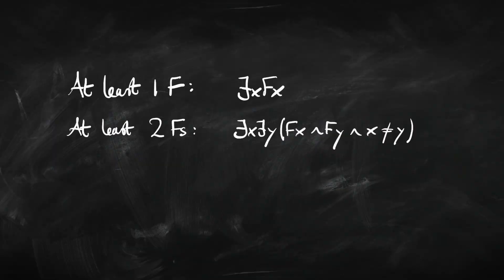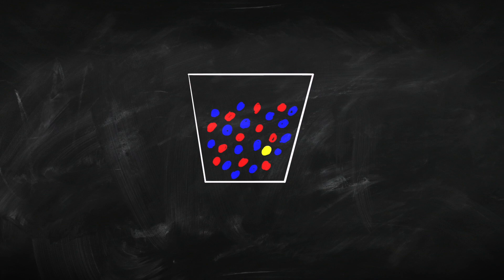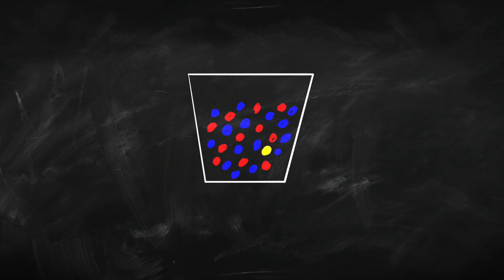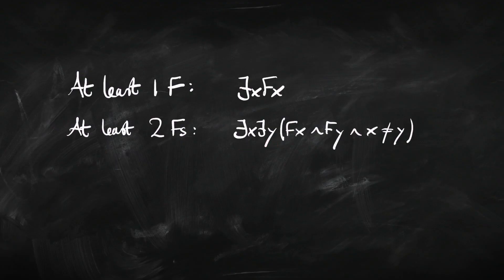So the sentence we need to express that there's at least two F's is: there's an x, there's a y, x is F and y is F, and they're not the same thing. If we pick out a ball, put it back, pick out a ball, and they're both red and they're not the same, then there must be at least two red balls. So in order to express that there are at least two of something, we need to use identity — we need to say the two things we pick are not the same. The x and the y exist, and they're not the same thing.